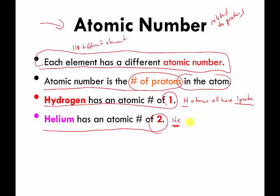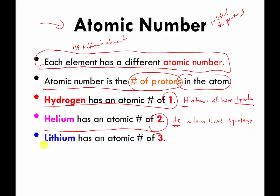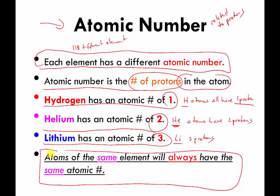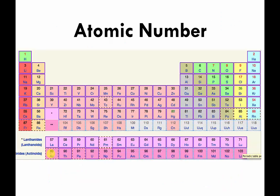All helium atoms have two protons, and if they didn't have two protons they would not be helium. Lithium has an atomic number of three, and all lithium atoms have three protons. The punchline here is that atoms of the same element always have the same atomic number, which means they always have the same number of protons.